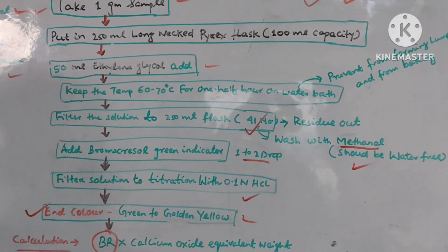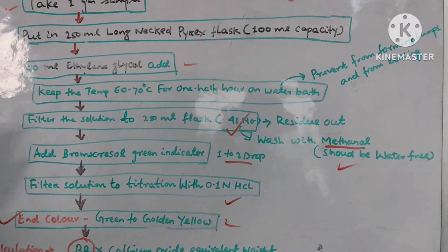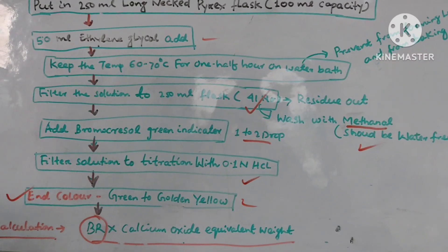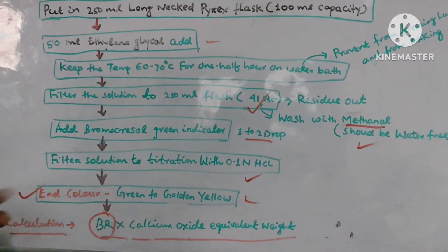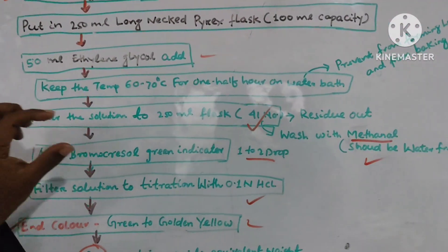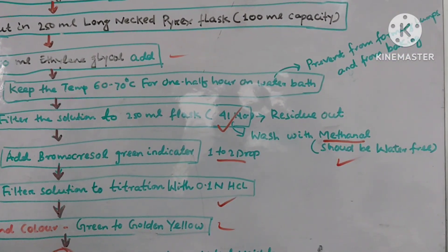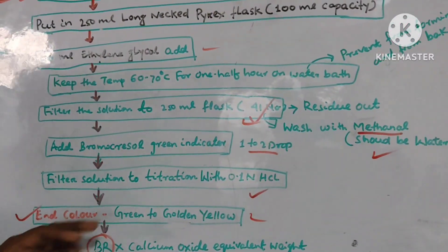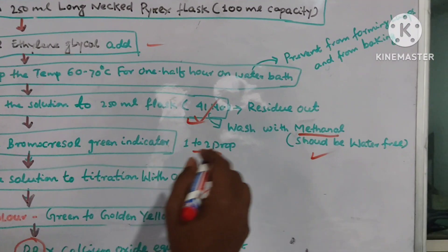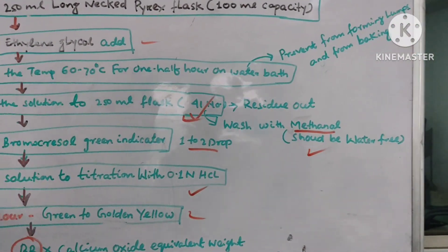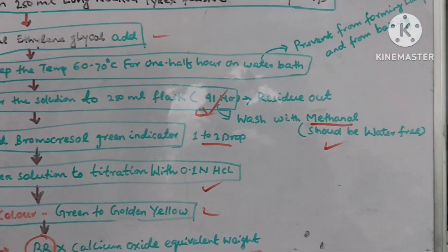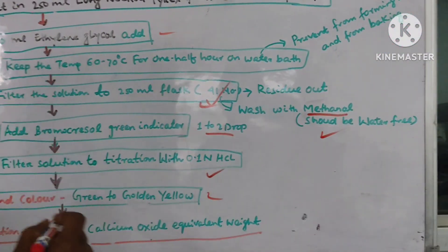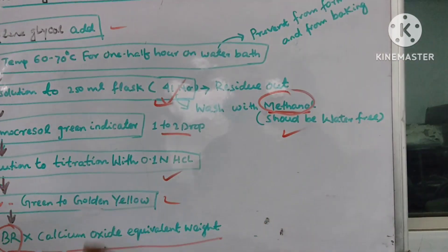Note carefully during the five-minute checks, because it should be done very carefully. If baking or lumps form, the testing result will not be clear and the wrong result will arrive automatically. During the monitoring time, monitor for any forming of lumps or any type of baking. Then filter the solution through a 250 ml No. 41 filter and wash with methanol, because the methanol used should be water-free — one percent water content is very important for this testing.